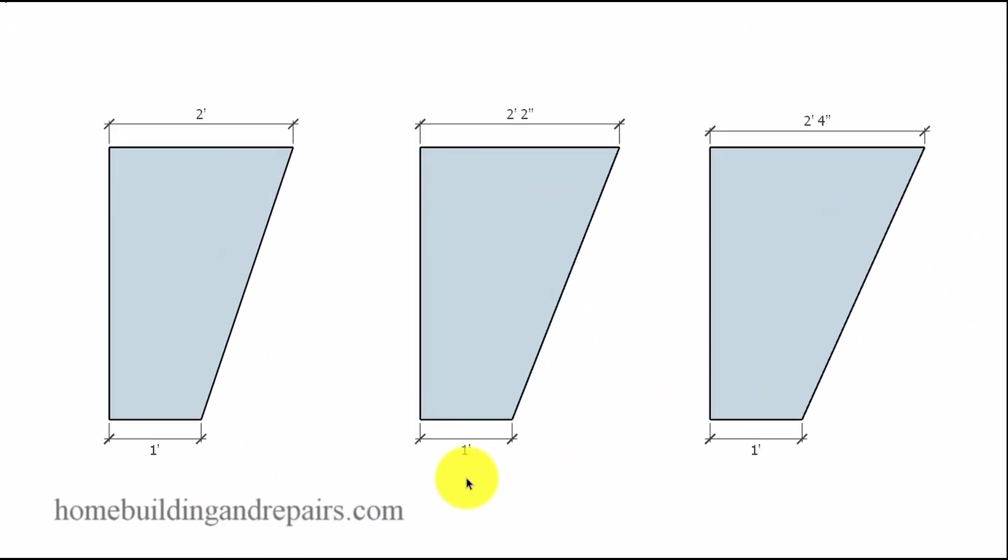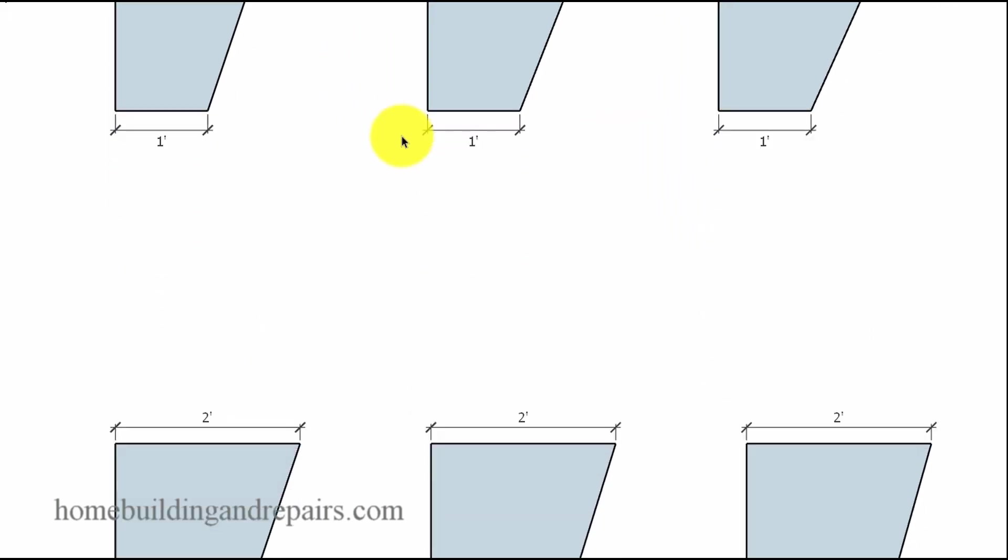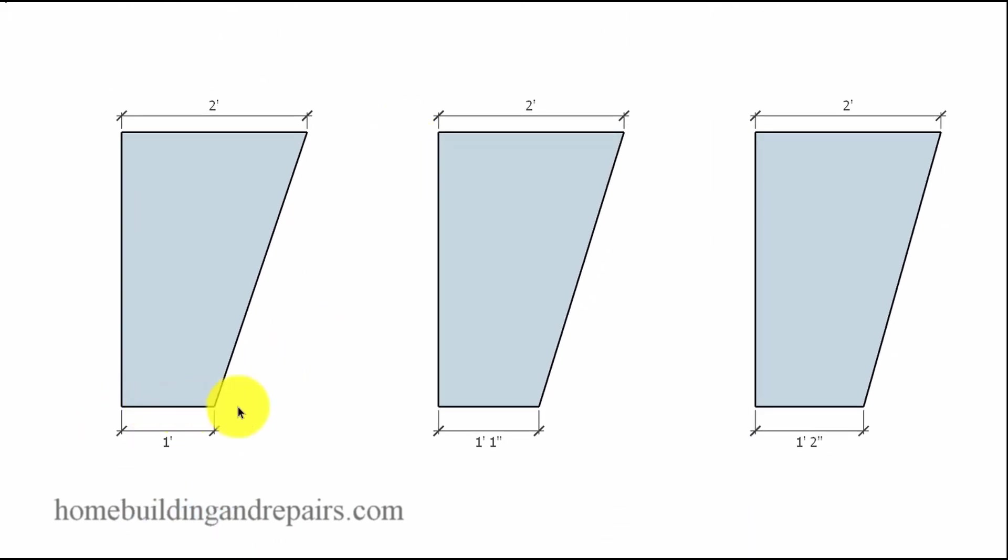And this is just another example, kind of throwing it out there. You can leave the inside measurement the same but move the outside measurement. This would be consistent, and then here we changed the inside measurement and kept the stairway consistent.